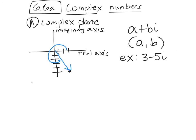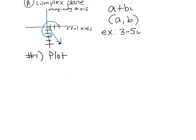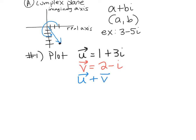Number one: we are going to plot some vectors. We'll plot vector U, which is in complex form: U equals 1 plus 3i. Then we'll plot vector V, which equals 2 minus i. And then we are going to plot vector U plus V.